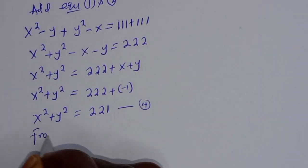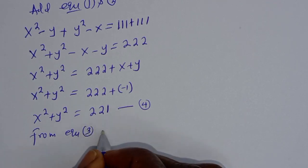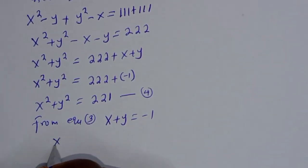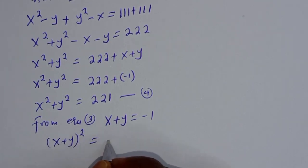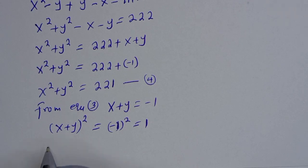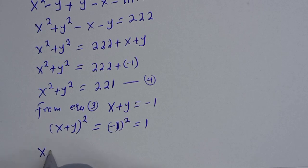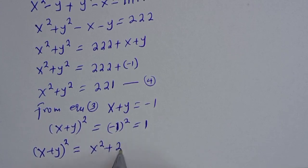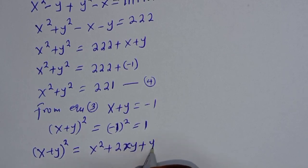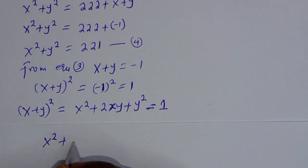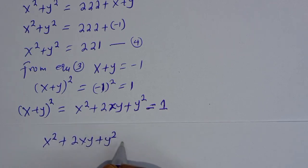From equation 3, x plus y is equal to negative 1. Let's square both sides: (x plus y) squared equals (negative 1) squared, which equals 1. From the expansion rule, (x plus y) squared equals x squared plus 2xy plus y squared, which equals 1.